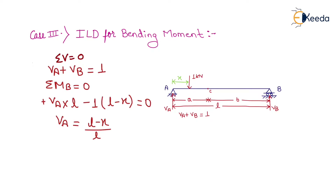For finding the influence line diagram for bending moment at a particular section C, we need to use a simply supported beam whose span length is L, and the section is at A meters from the left support and B meters from the right support. For the calculation of bending moment at C, we need to find the support reactions Va and Vb.